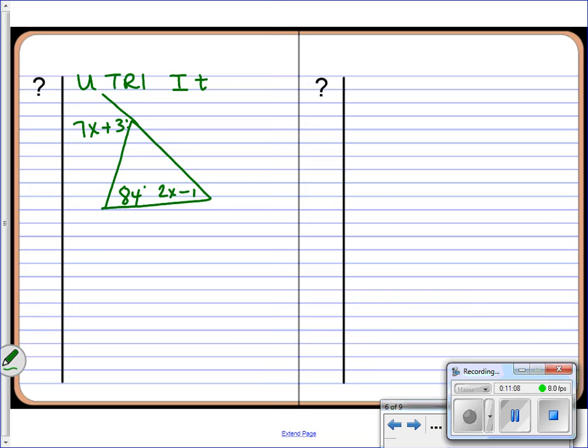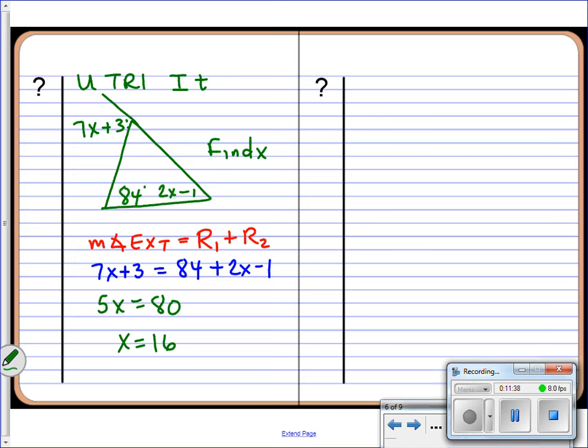All right, you try this one. See if you can find out what x is. Put me on pause and use the exterior angle theorem. That means you're writing up the measure of the exterior angle equals remote 1 plus remote 2. Go ahead and do that. Write it without any numbers in it, then write it with the numbers, solve it, and come back and check with me. I hope that you got x equals 16 on that one. All right, there you have it. Let's go ahead and write up a summary and get ready to do our dual problems.